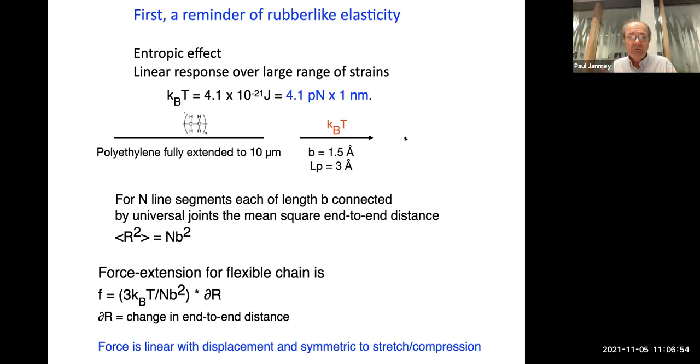Note that this is a perfectly linear expression, that force just depends on the extension, and it's the same whether the extension is positive or negative. This can be built into a network structure that tells you the shear modulus of a network or melt made out of these kinds of polymers will be proportional to thermal energy in the numerator and the mesh size in the denominator. That works great for random coil polymers.